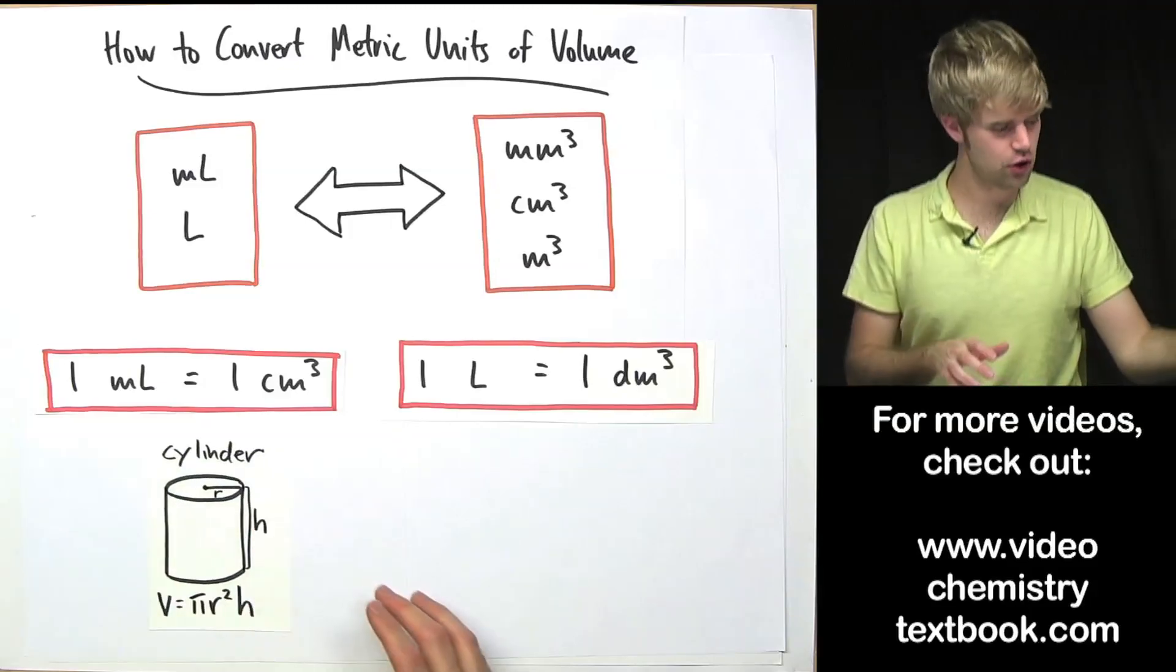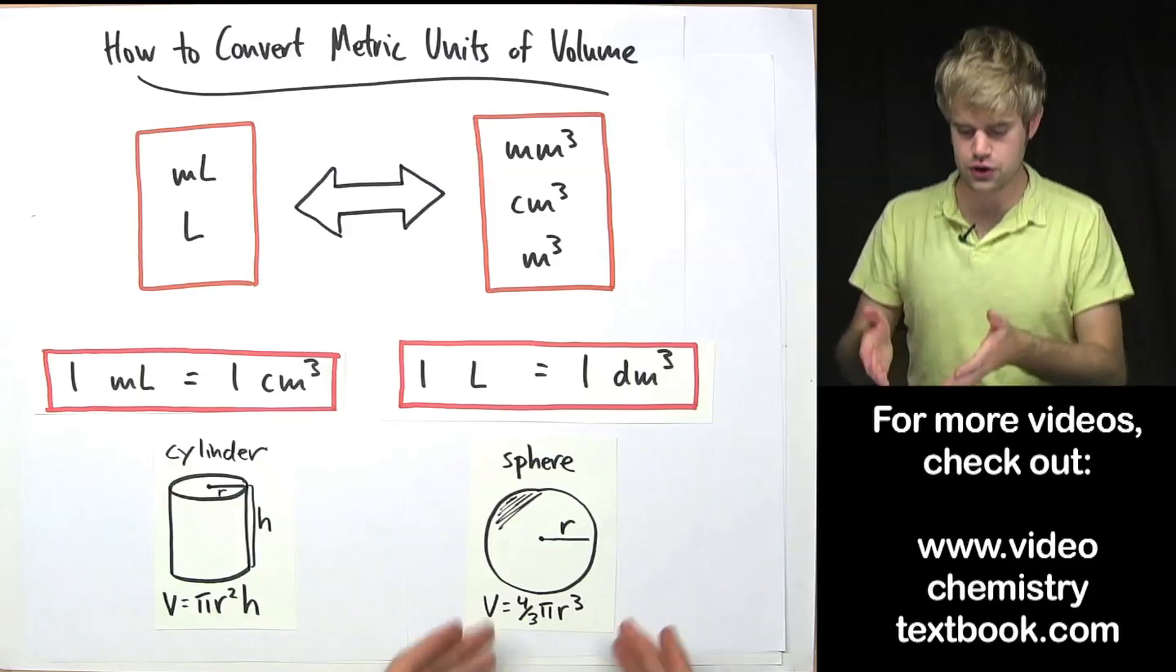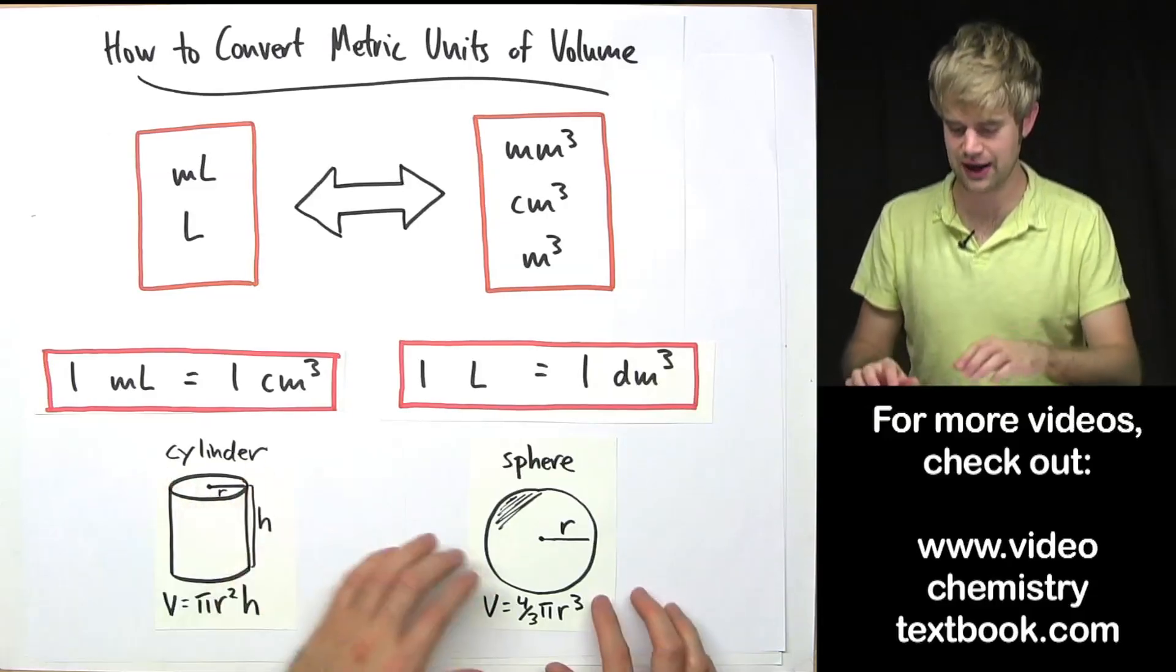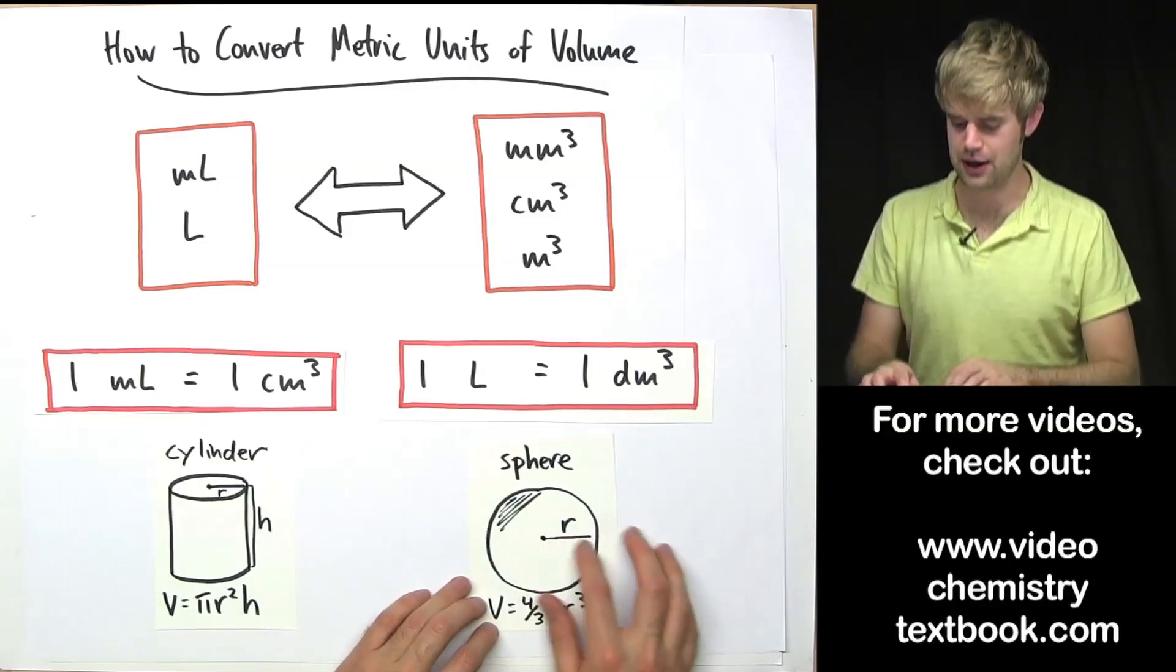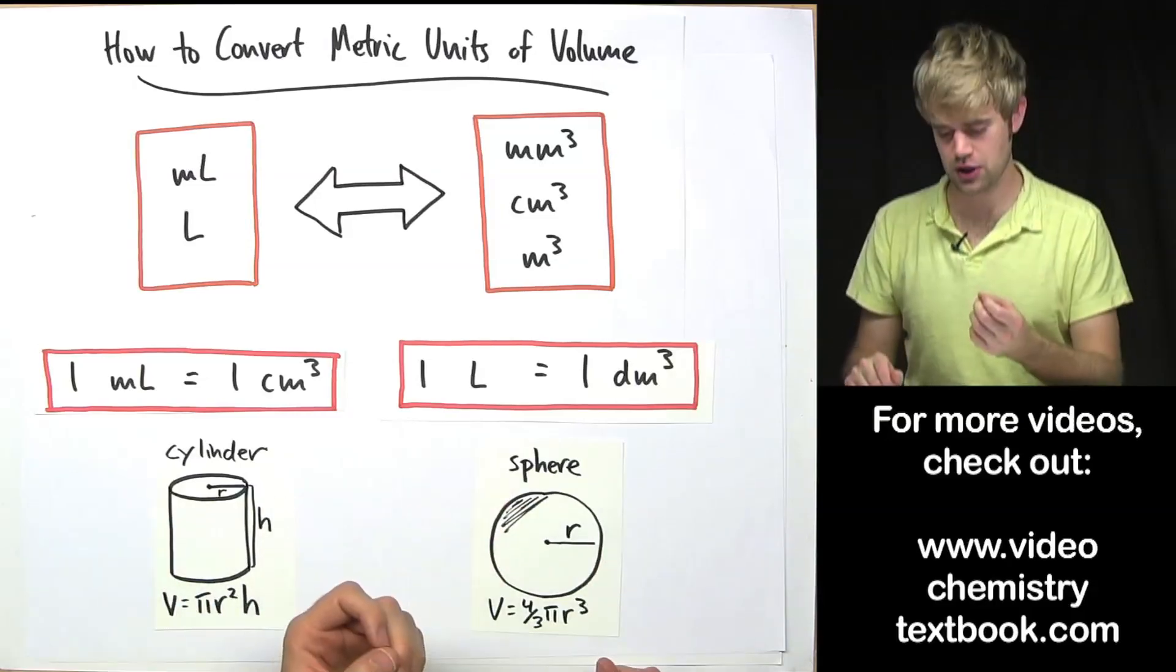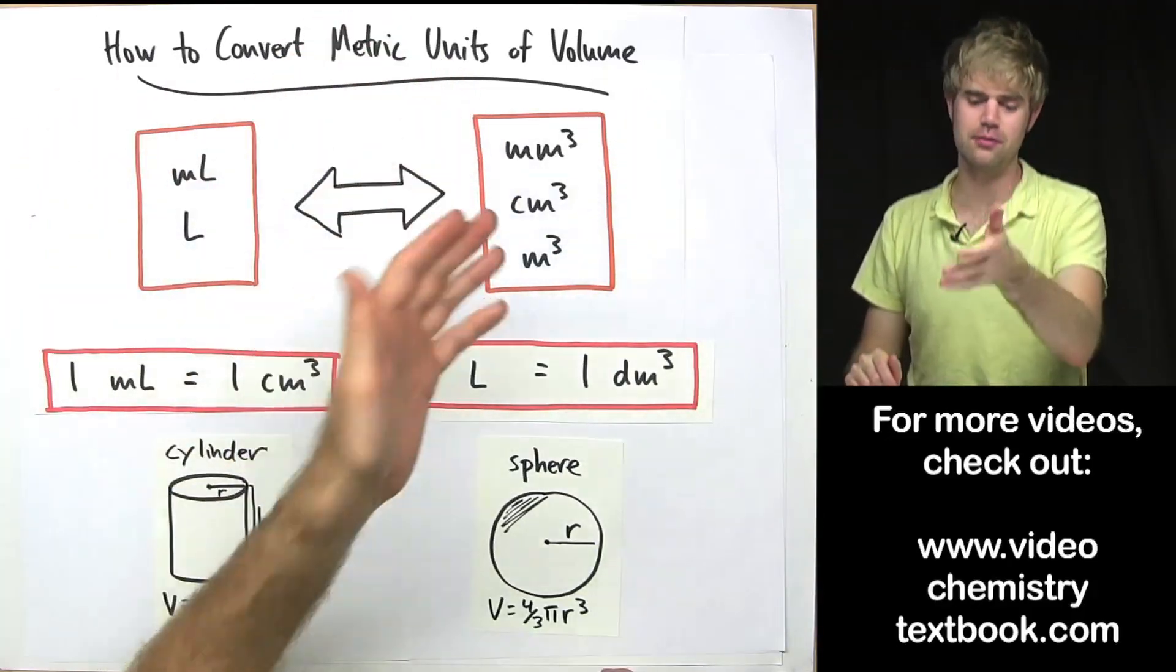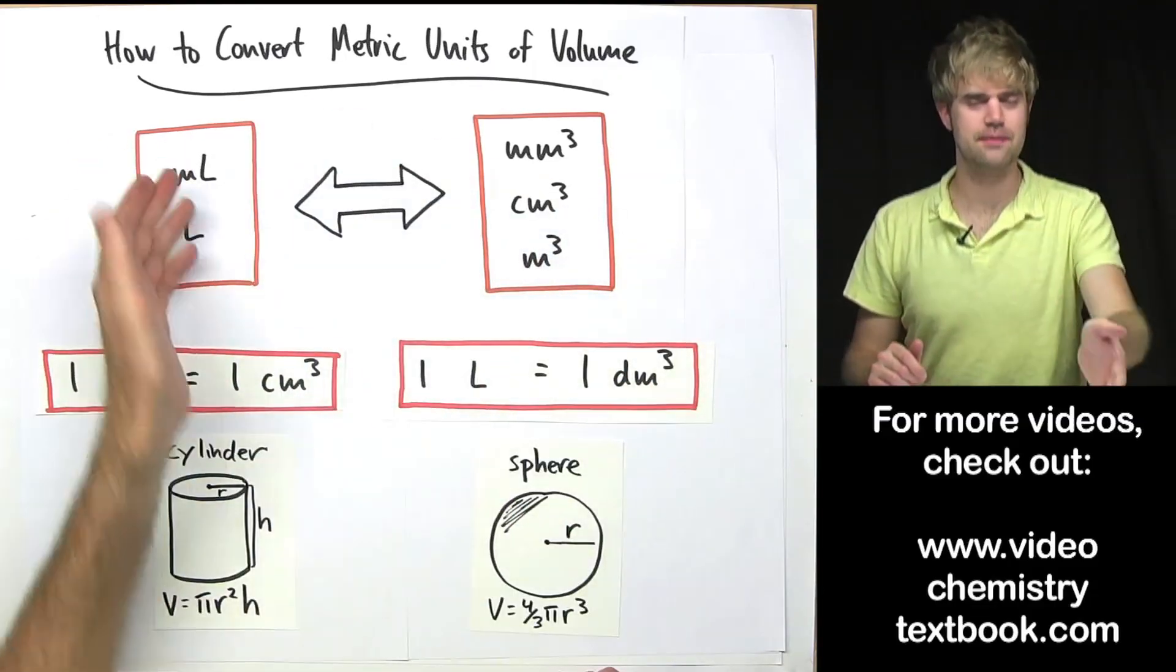Sometimes you might get cylinders or spheres. We have to calculate their volume and then do a little conversion. So here are two equations that might be useful to find the volume of a cylinder. It's pi r squared h where r is the radius and h is the height. And to find the volume of a sphere it's going to be 4 thirds times pi times the radius cubed. Regardless of what type of shape you're talking about you're going to end up with units of a cubic something or other, cubic centimeters, cubic millimeters, cubic meters and then you can use these conversion factors to move between these and these.